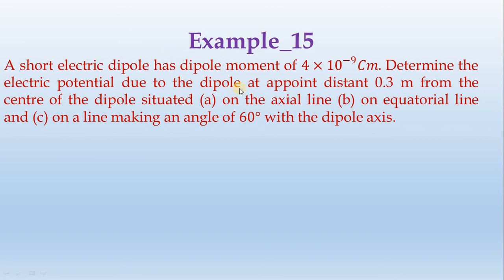Determine the electric potential due to the dipole at a point 0.3 meters from the center of the dipole situated: first condition, on the axis line; second, on the equatorial line; and on a line making an angle of 60 degrees with the dipole axis.